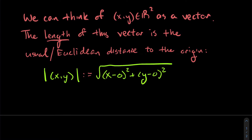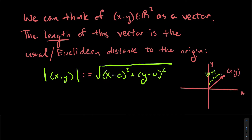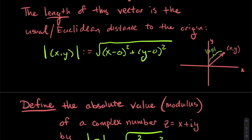We can think of a point (x, y) in R2 as a vector, and the length of that vector is the usual Euclidean distance from that point to the origin (0, 0). Using absolute value notation for length, the length of vector (x, y) is the square root of (x minus 0) squared plus (y minus 0) squared — that's how far that point is from the origin.